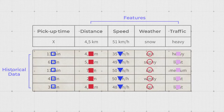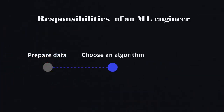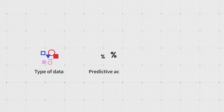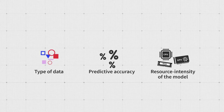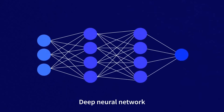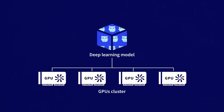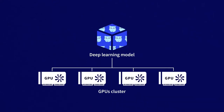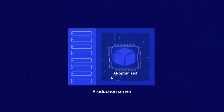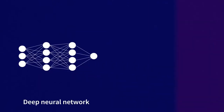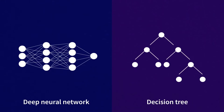Once the data is ready, an ML engineer needs to choose an algorithm that would fit the task. The choice depends on the type of data, expected predictive accuracy, and how resource-intensive the model is. You may need deep neural networks to process images and videos with 98% accuracy, but training them would require renting clusters of GPUs, and running those models in production may require specific AI-optimized processing units. But sometimes, good old decision trees would be enough.